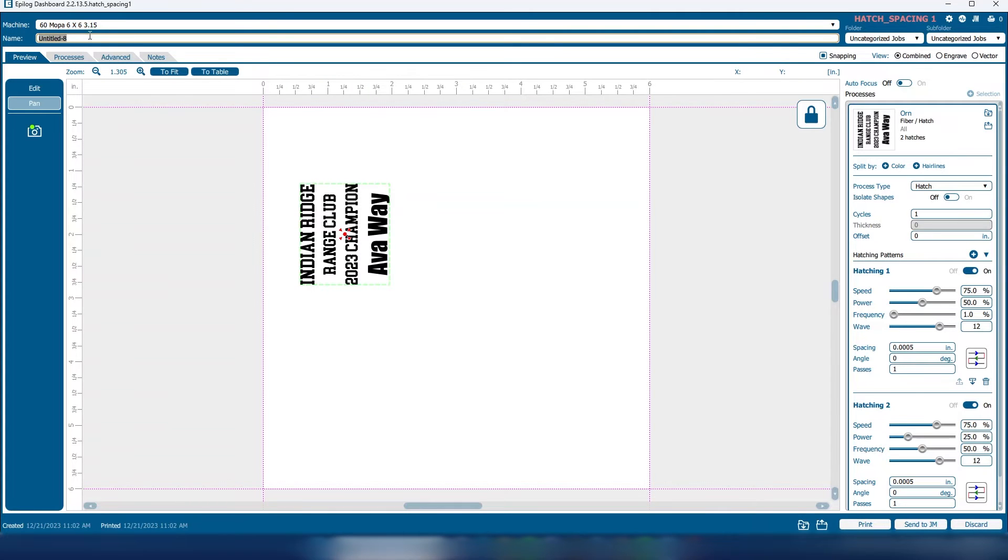So I'm going to print this over. I'm going to give it a name. I'm going to call this Indian. And then we're going to print that over to the machine and then we'll set a new home position at the laser and then we'll let it run.